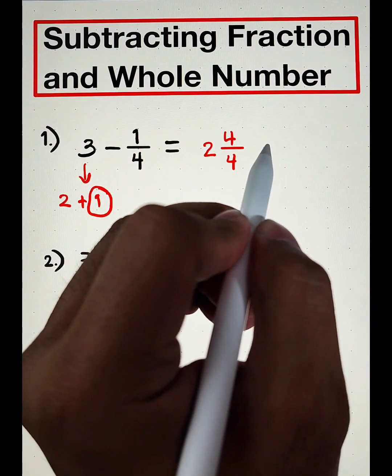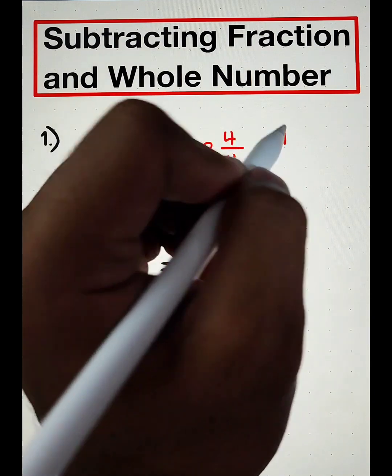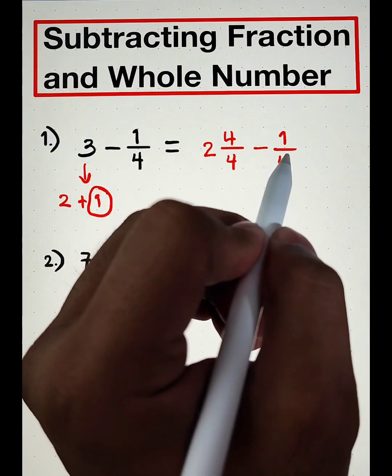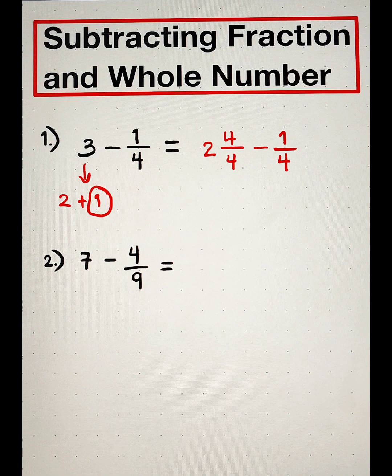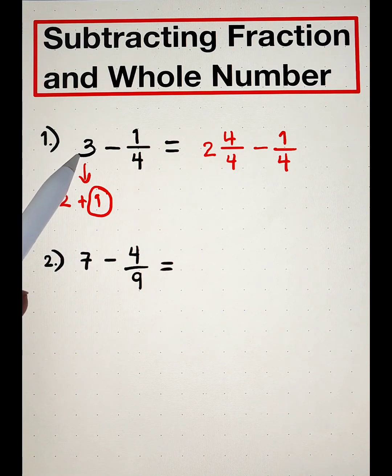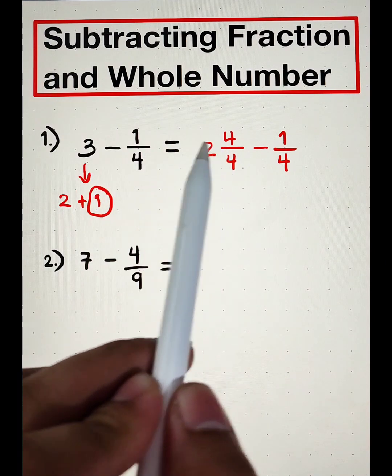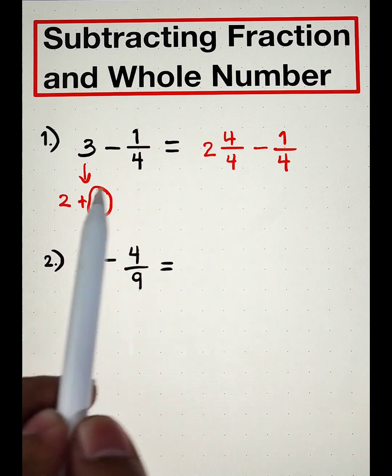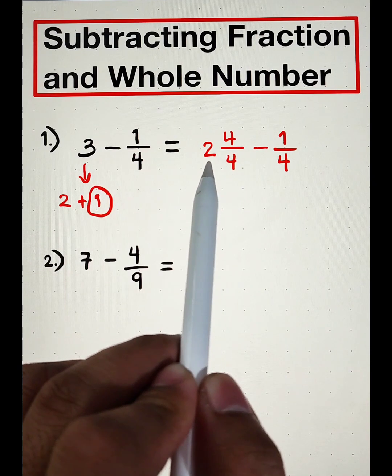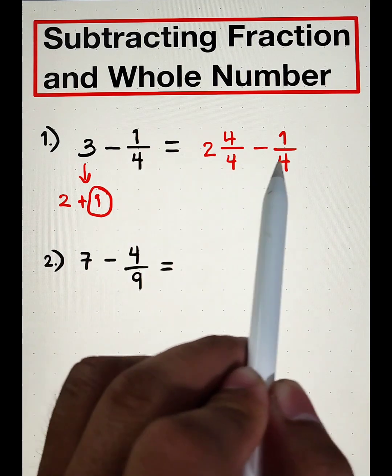And then copy minus 1 over 4. So let me give you a recap. We break down 3 into 2 plus 1. And this whole number 1, we convert it into a fraction, 4 over 4. And then attach the whole number and copy minus 1 fourth.